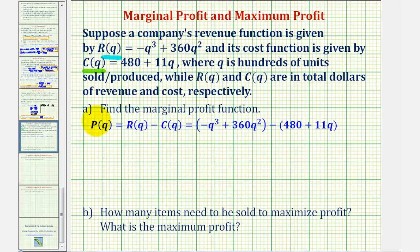Part a, we want to find the marginal profit function, which is the derivative of the profit function. And then part b, how many items need to be sold to maximize profit, and what is the maximum profit.